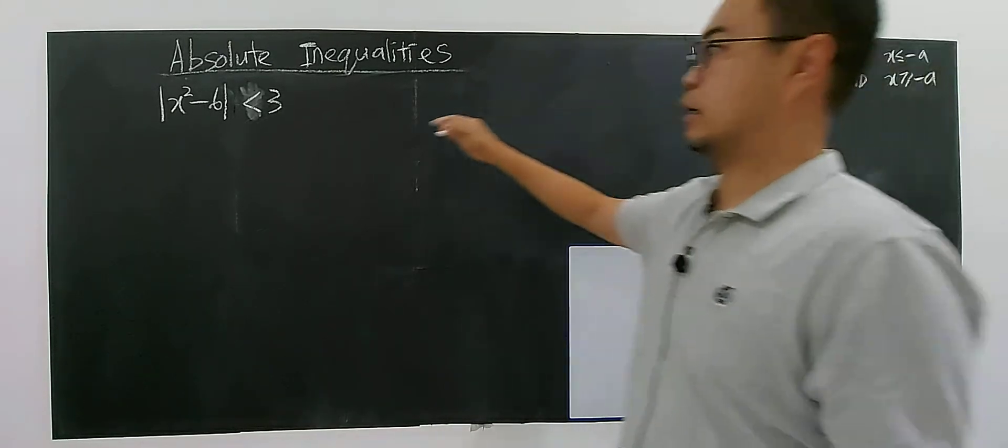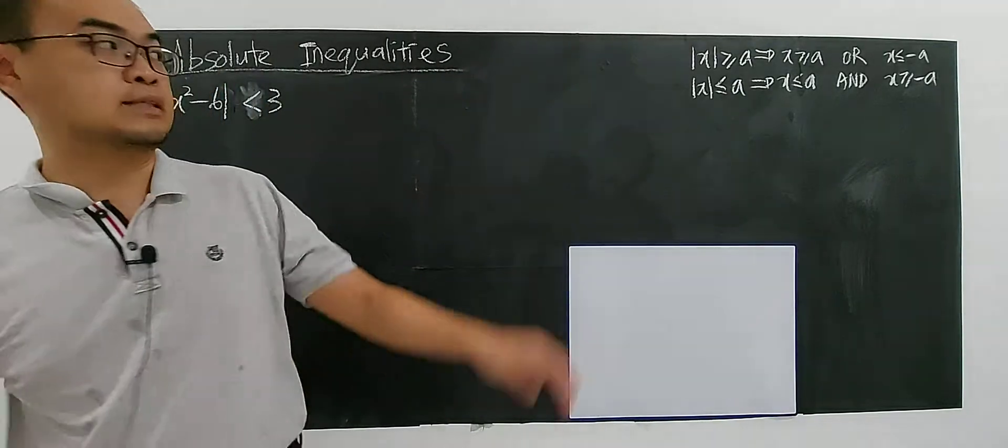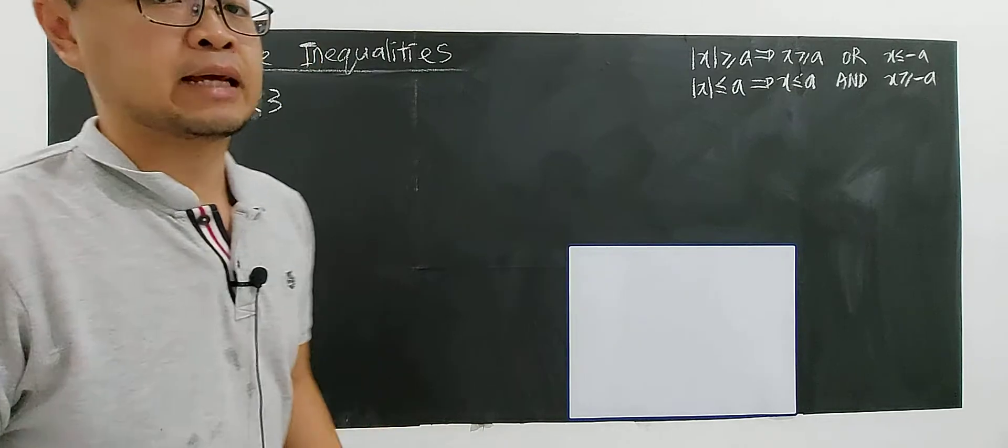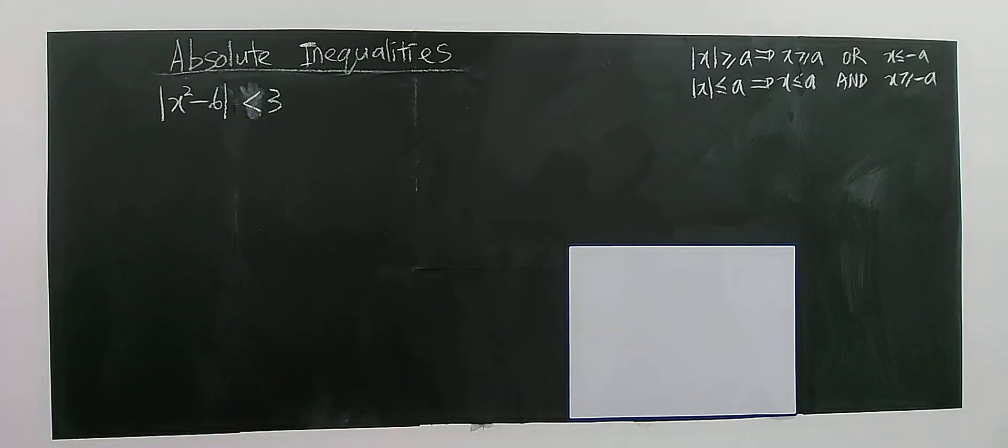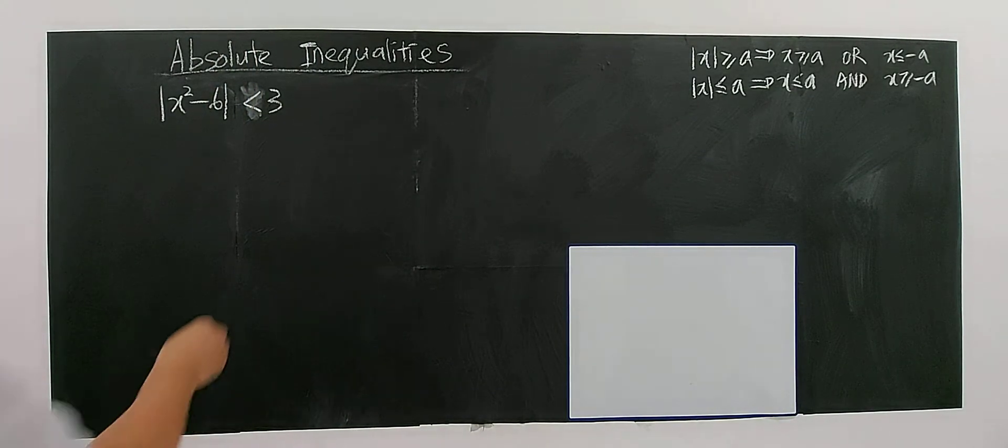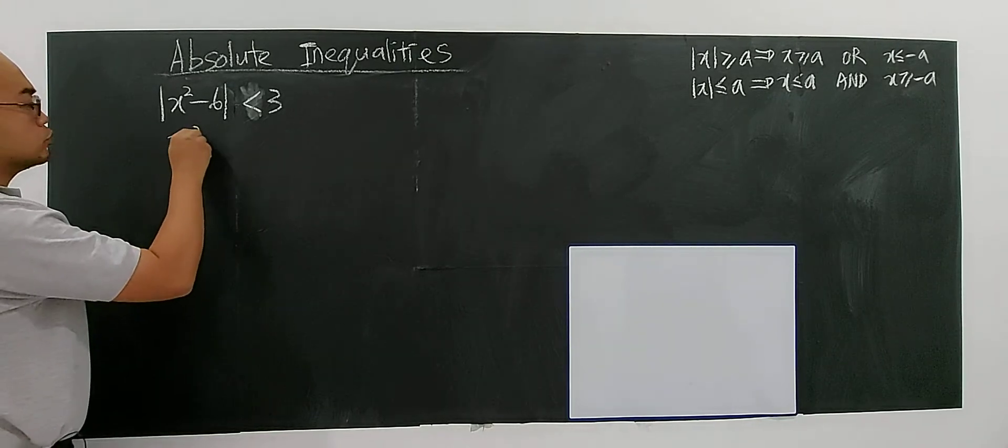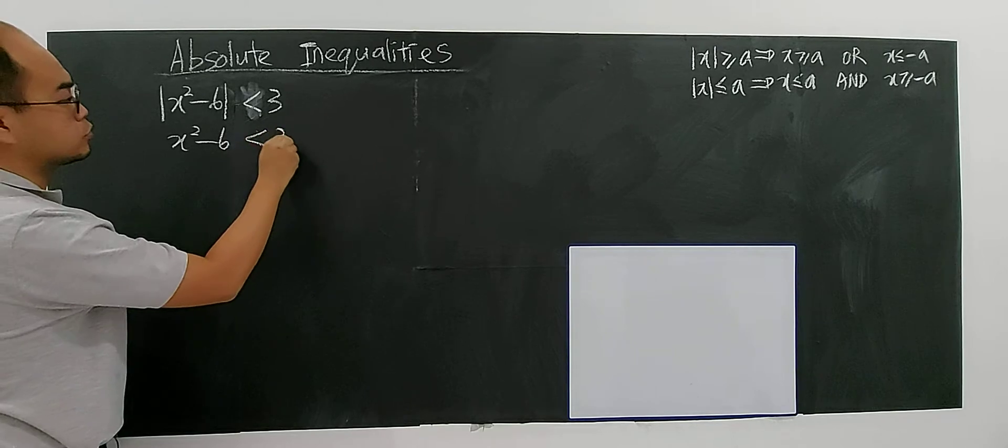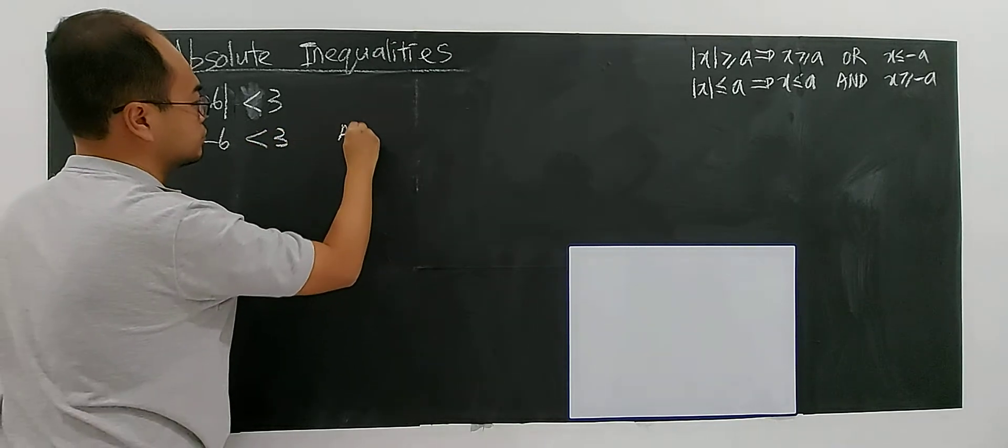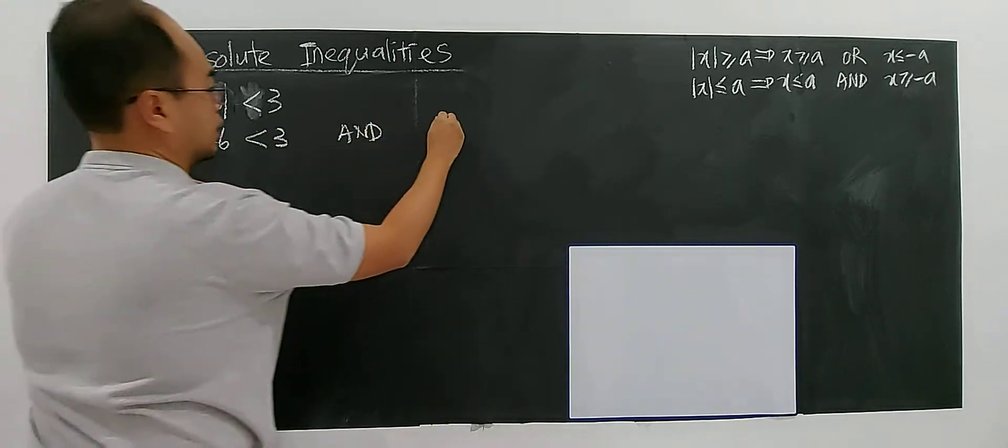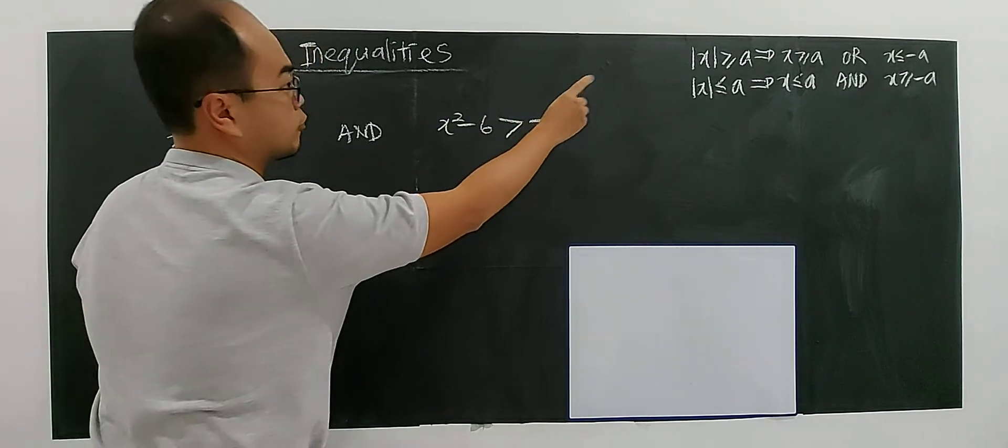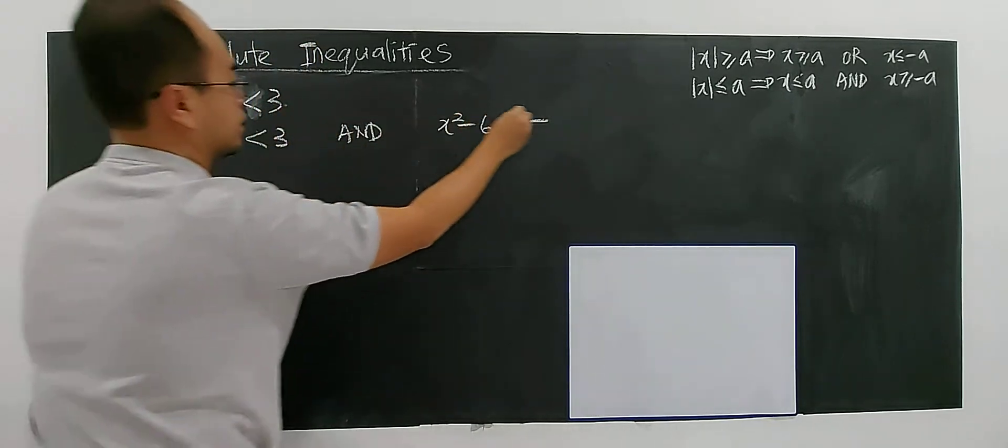For this case, I'm going to use the second formula without the equal. But it's the same. Less than, right? The case is still less than. So then I have x to the power of 2 minus 6 less than 3 and x square minus 6 greater than negative of a, negative 3.